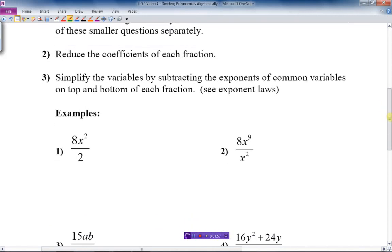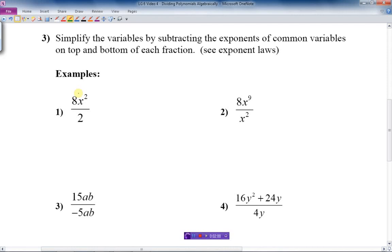Example number one: 8x squared divided by 2. Well, that's just one term on top of one term on the bottom. First of all, we'll just do the numbers. We take the 8 and the 2 here, and 2 divided into 8—cancel it out—2 goes into 8 four times, and we have x squared. That's the answer: 4x squared.